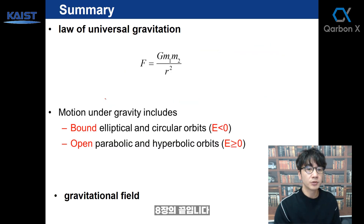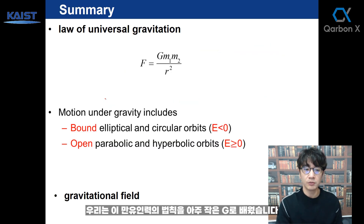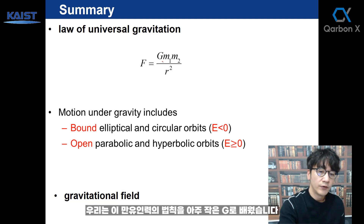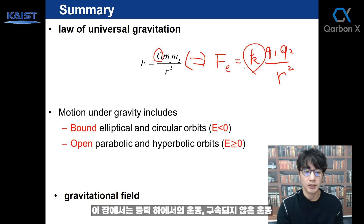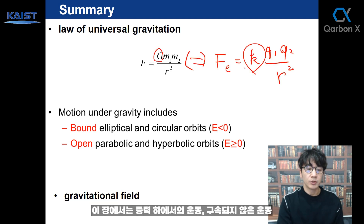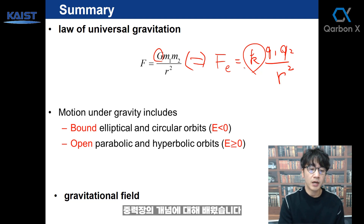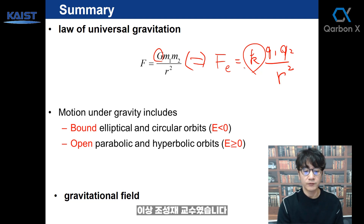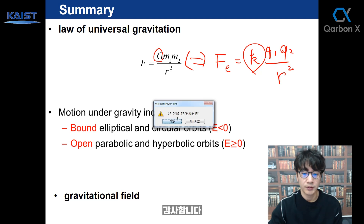Here's the end of chapter 8 — very simple, actually. We learned the law of universal gravitation with the gravitational constant G. We also learned motion under gravity: bound and unbound motion, and the concept of the gravitational field. Thank you.